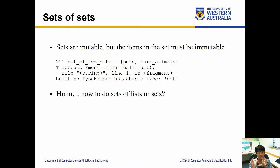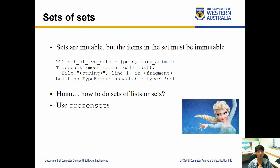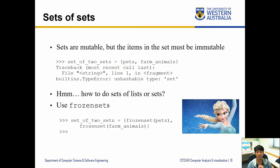The problem is that sets are mutable, but the items inside a set have to be immutable. So if you want to put a set inside another set you have to make those items immutable. The solution is to convert a mutable object into an immutable one — that's using what we call a frozen set.